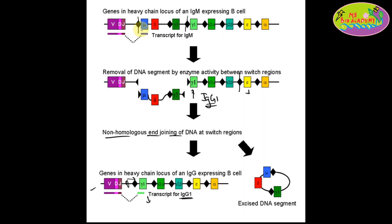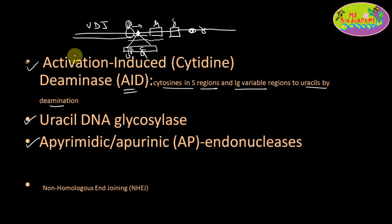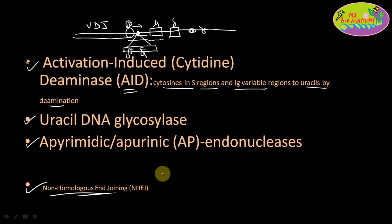A double-stranded break is created in both strands wherever those uracils are. That is how the double-stranded break happens in the S region: first the AID enzyme comes and converts all cytosines in the S region into uracils, then DNA repair enzymes create breaks at all those positions. Due to these breaks, those portions are deleted and the rest of the portion is joined together by non-homologous end joining — completing the process of class switching.